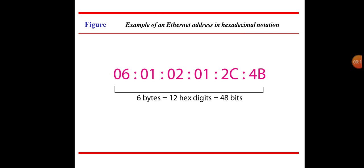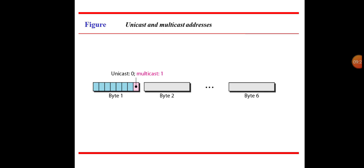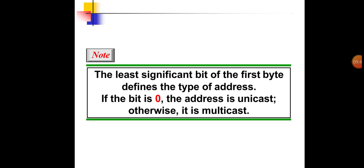An example of an Ethernet address in hexadecimal notation: 06:01:02:01:2C:4B. Here 6 bytes equals 12 hexadecimal digits, which equals 48 bits. The least significant bit of the first byte defines the type of address — if the bit is 0, the address is unicast; otherwise it is multicast.